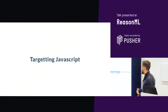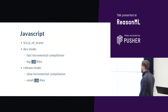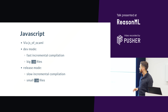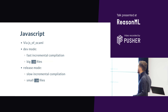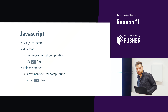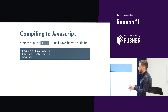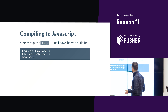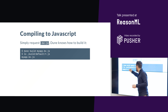Dune also supports producing JavaScript applications via js_of_ocaml, a project similar to BuckleScript. We support two modes: a development mode with fast incremental compilation but large JS files, and a release mode where after a change you pretty much redo everything from scratch so it takes longer, but you get a small JS file. To benefit from this, there is nothing special you need to do — you just ask Dune to build the '.bc.js' file and it already knows how to do all this.